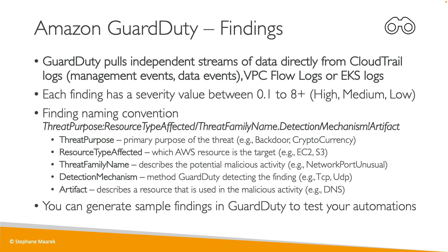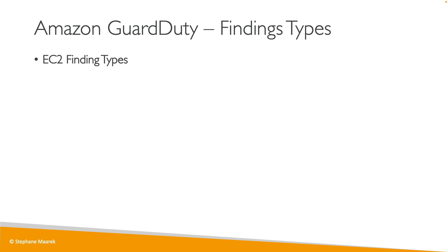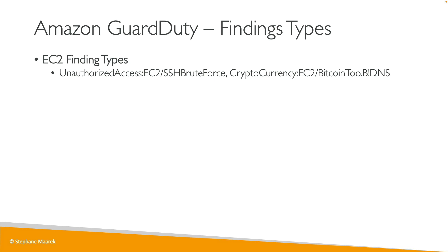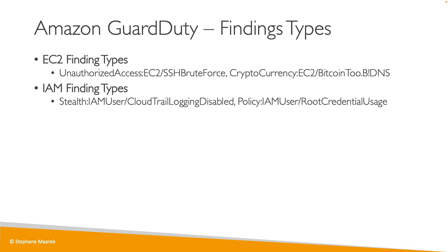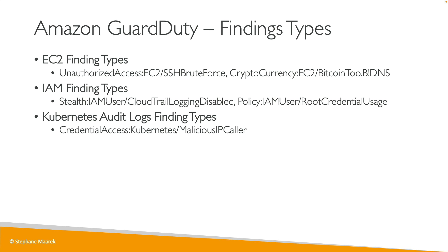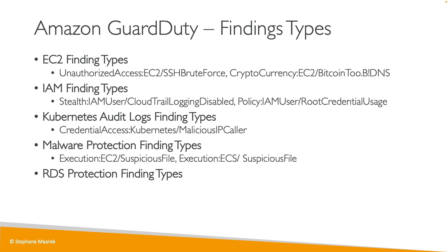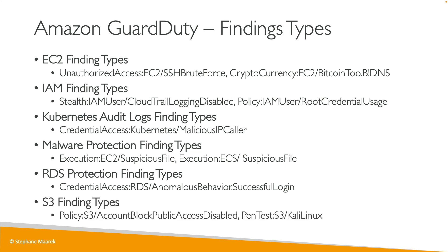You can generate sample findings in GuardDuty to make sure that everything works as expected for a specific finding. Looking at concrete finding types: for EC2, you have UnauthorizedAccess:EC2/SSHBruteForce — someone trying to brute force port 22 — or a cryptocurrency attack on EC2. For IAM findings, a user disabling CloudTrail logging or using root credentials. For Kubernetes, access to credentials from a malicious IP. For malware protection, suspicious files, or a successful login through anomalous behavior. For S3, public access being disabled making a bucket public, or someone performing penetration testing on Amazon S3.